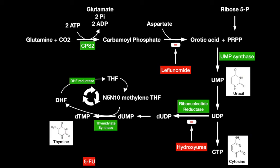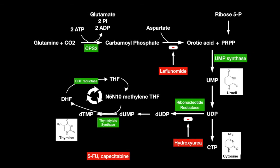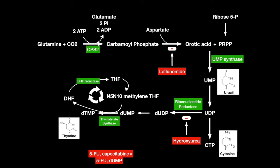5-fluorouracil and its prodrug capecitabine form 5-fluorodeoxyuridine monophosphate, which inhibits thymidylate synthase, decreasing dTMP production. In turn, thymine production will be decreased.